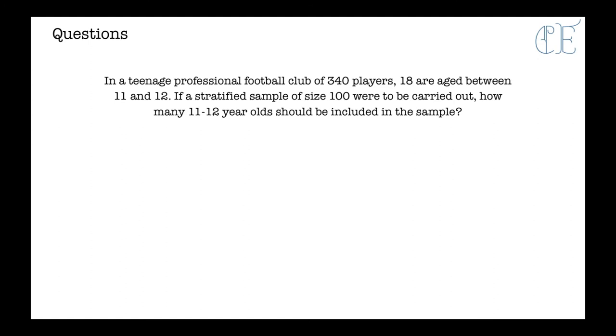So another question then. In a teenage professional football club of 340 players, 18 are aged between 11 and 12. If a stratified sample of size 100 were to be carried out, how many 11 to 12 year olds should be included in the sample? So for this one, it's a little bit different. So you've got 18 are aged between 11 and 12. It's not necessarily different in the way you work it out, but just be careful with the worded questions. Make sure you're taking out the correct numbers. 18 are aged between 11 and 12, and we're taking a sample size of 100.